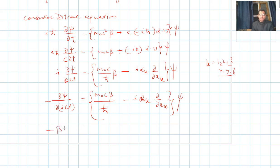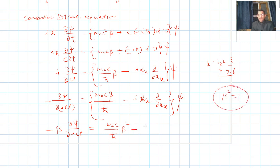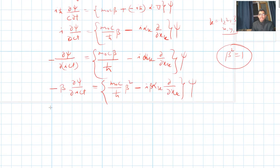Multiplying both sides by β, it becomes -β ∂ψ/∂(ict) = (m₀c/ħ)β² - iβαₖ ∂/∂xₖ acting on ψ. Since β² = 1, we simplify to -β ∂ψ/∂(ict) = m₀c/ħ - iβαₖ ∂ψ/∂xₖ.